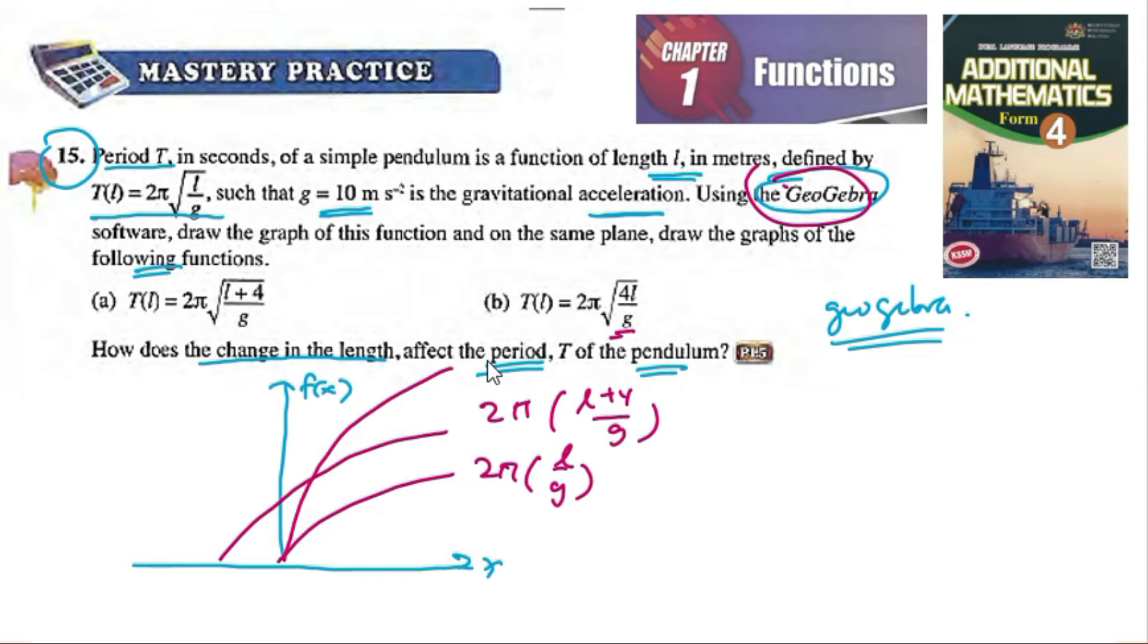Something like this. This one is 2π, this one is b, so this one is a and this one is b. You see here how the change of length affects the period—the length of pendulum affects the period.